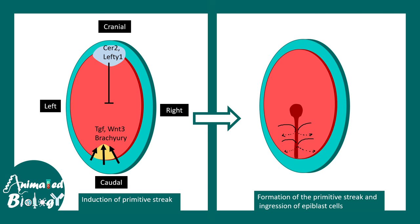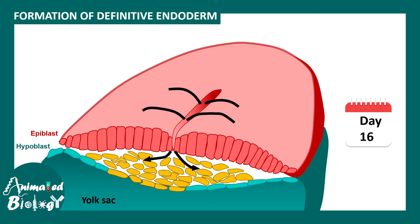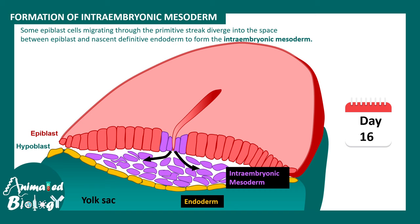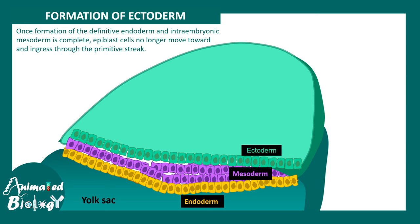After epiblast cells ingress, they replace the cells of the hypoblast, ultimately forming the definitive endoderm — this happens at the early stage of day 16. More cells then move in to form the intraembryonic mesoderm between the endoderm and the epiblast layer. After the intraembryonic mesoderm is formed, there is no more requirement for ingressing cells, so the cells that remain and are no longer ingressing form the ectodermal region. By the end of day 16, ectoderm, endoderm, and mesoderm have all been formed.